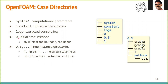Zero is the initial time. 0.5 is a dimensionless time, which is tau equal to 0.5. Inside the time folders, we have files by the name of T and gradient of T in each of the directions x, y, and z.